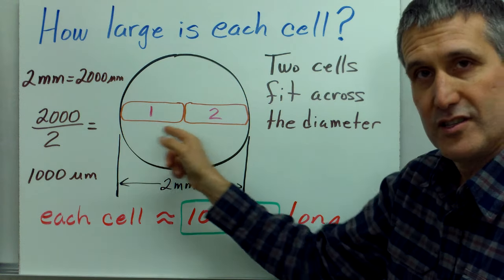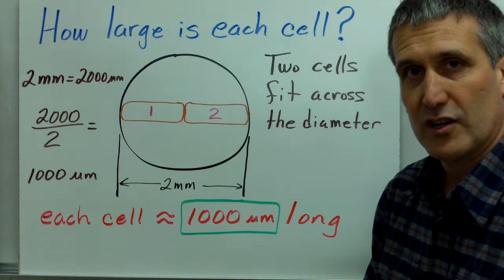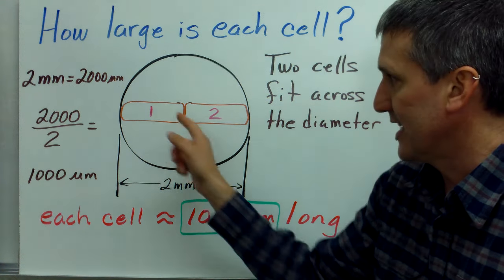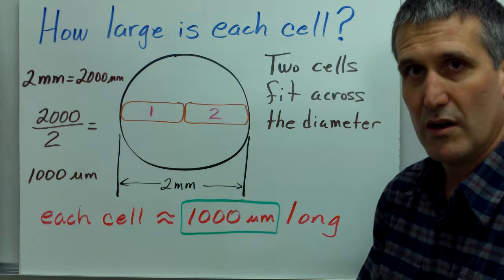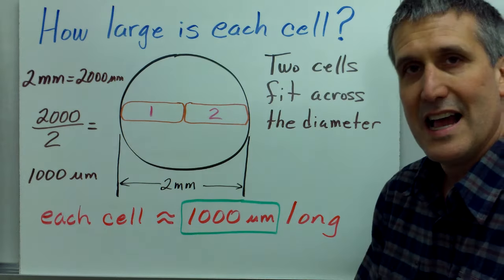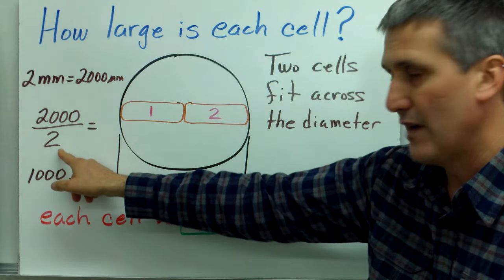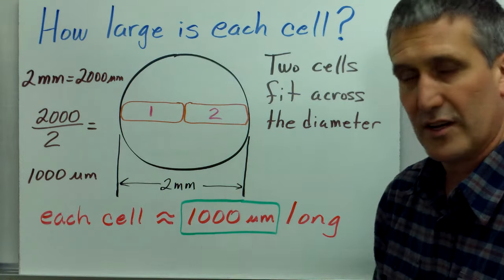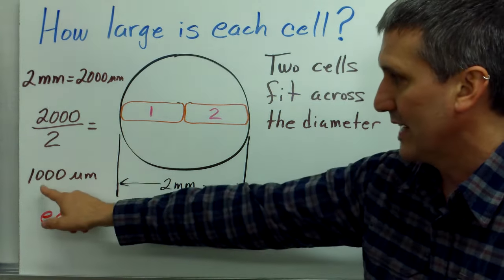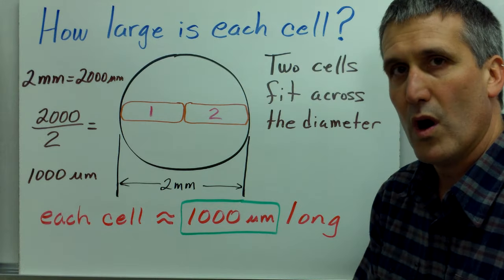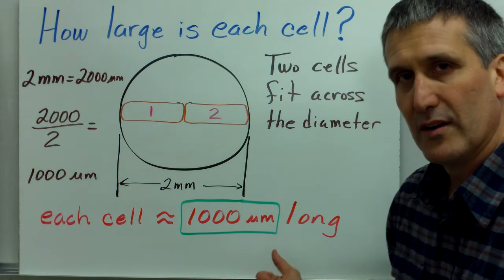Now we also know that there's 2 cells fit across the diameter of this. So each cell is not 2000 micrometers long. Each cell is half that distance. So we need to take 2000 and divide it by 2, the number that fit across the diameter, and that leaves us with each cell being 1000 micrometers long.